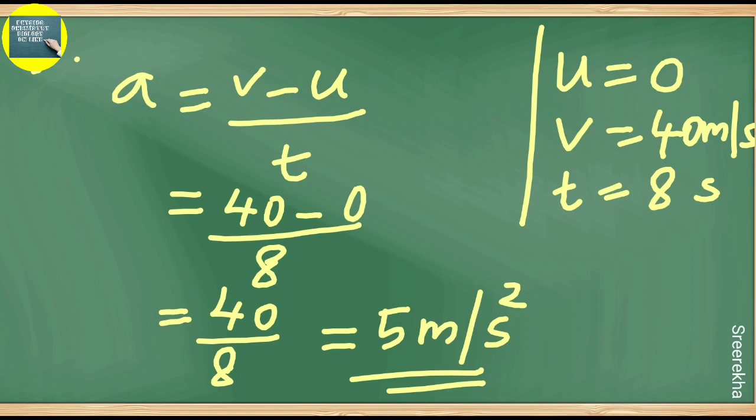40 divided by 8 equals 5. The unit of acceleration is meter per second squared. So the answer is 5 meters per second squared.